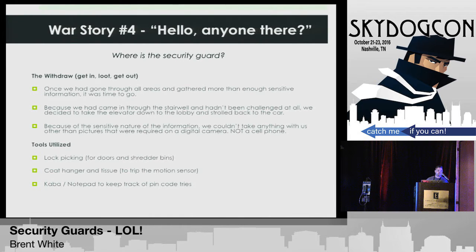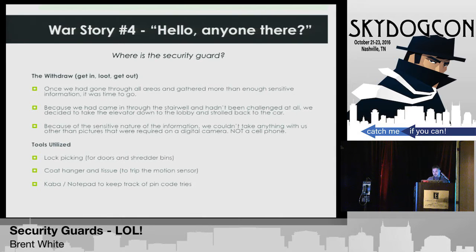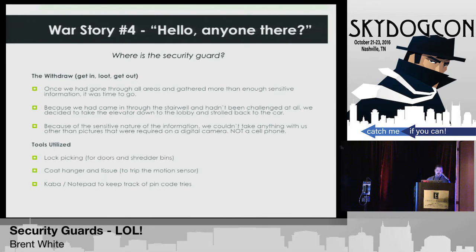We wanted to test the REX sensor — the request-to-exit sensor — on their two main glass doors at the entrance. I had a clothes hanger and some napkins. I sat there, straightened out the clothes hanger, tied napkins around it right in front of the camera, then stuck it through the gap in the door, waving it as big as I could trying to set off the sensor. No one ever came. At that point my partner Steve and I turned around, faced the camera, and started doing jumping jacks, waving, doing stupid dance moves — and no one ever came. So we cleaned up and left.